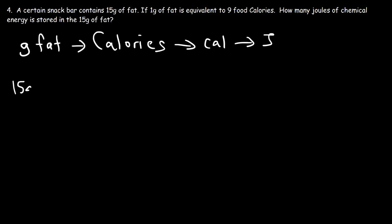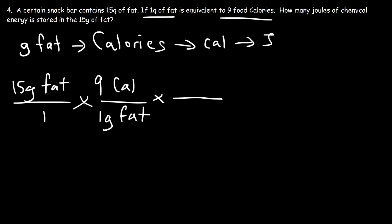So one snack bar has 15 grams of fat. And we have the conversion factor between grams of fat and food Calories. Now we know that 1 gram of fat contains 9 food Calories. And so we could cancel these two units. And 1 food Calorie is equal to 1,000 calories. And 1 calorie is 4.184 joules.